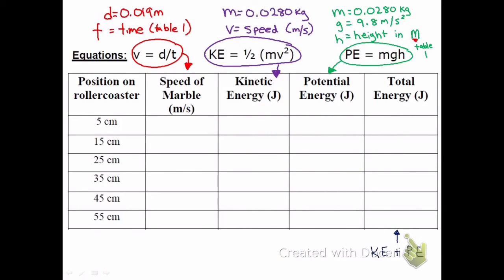Next, we're going to calculate the potential energy of the marble. Now, this should be a higher number because the marble was pretty high off the ground at this very beginning point. Potential energy is mass times gravity times height. The mass is 0.0280 kilograms. We're going to multiply that by gravity, 9.8. And we're going to multiply that by the height off the table.